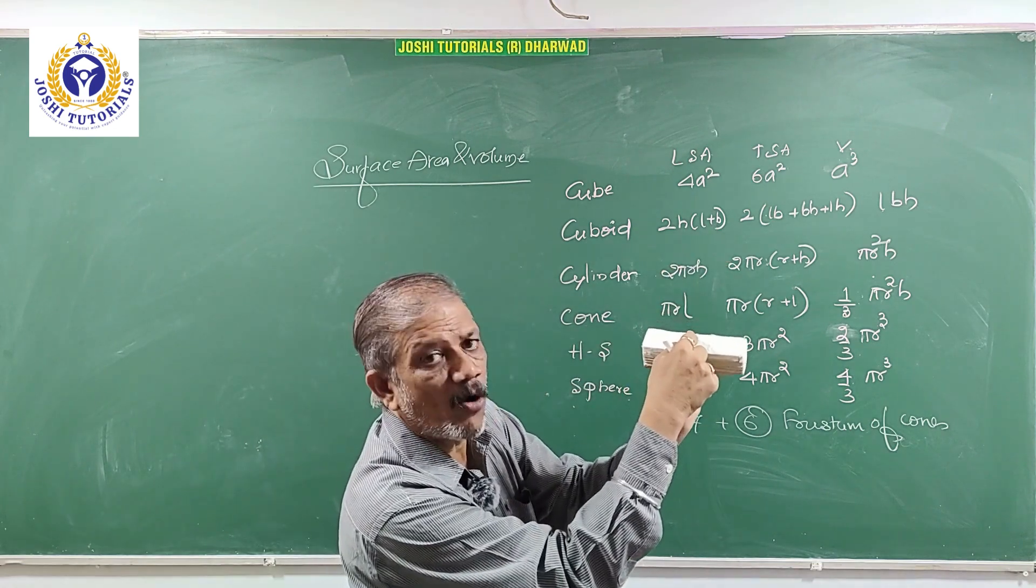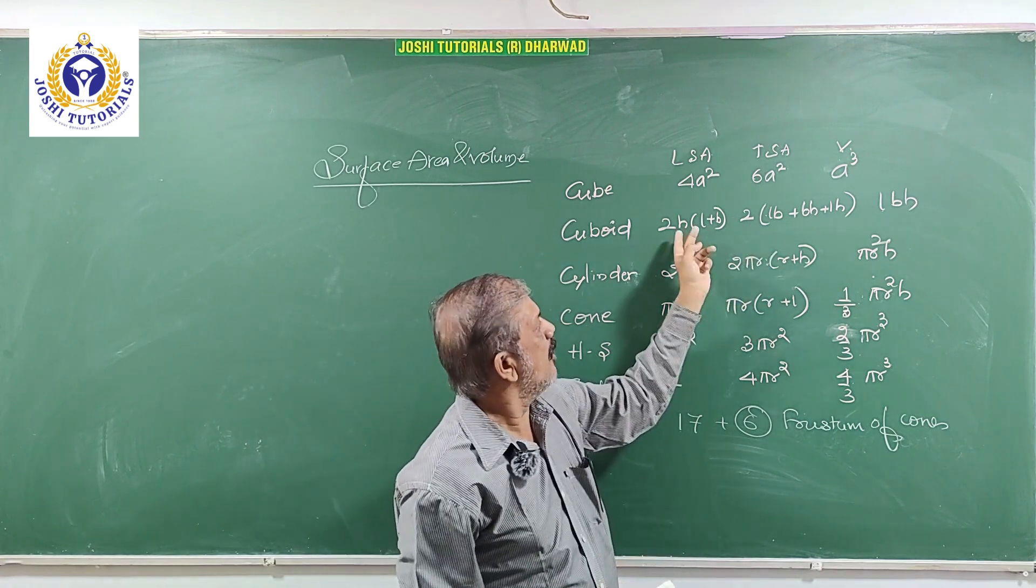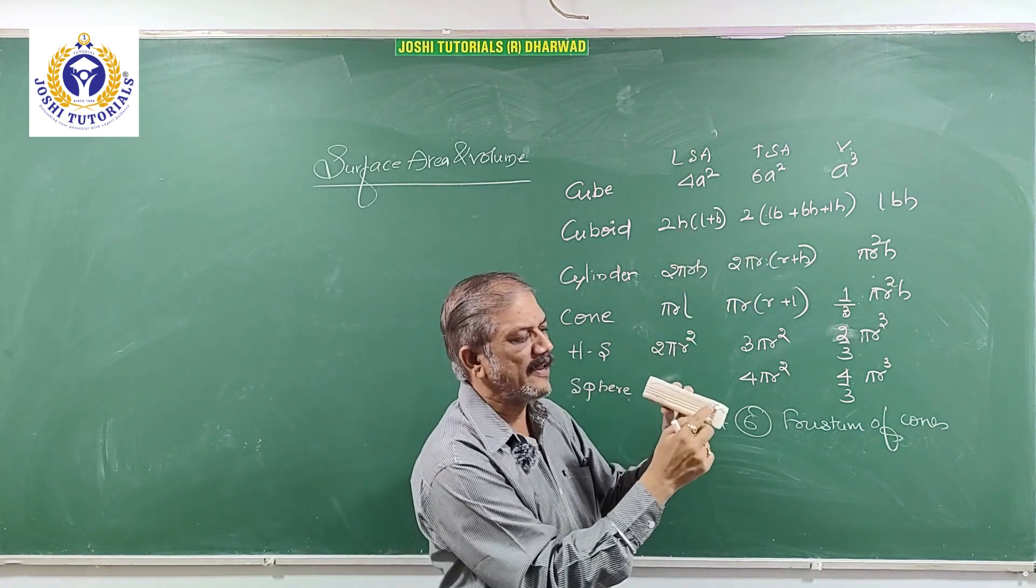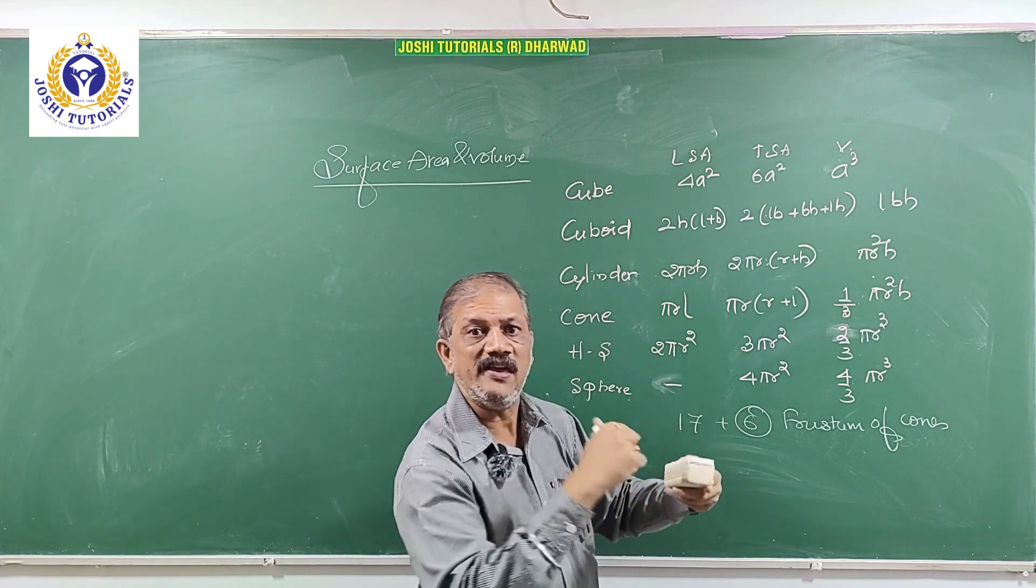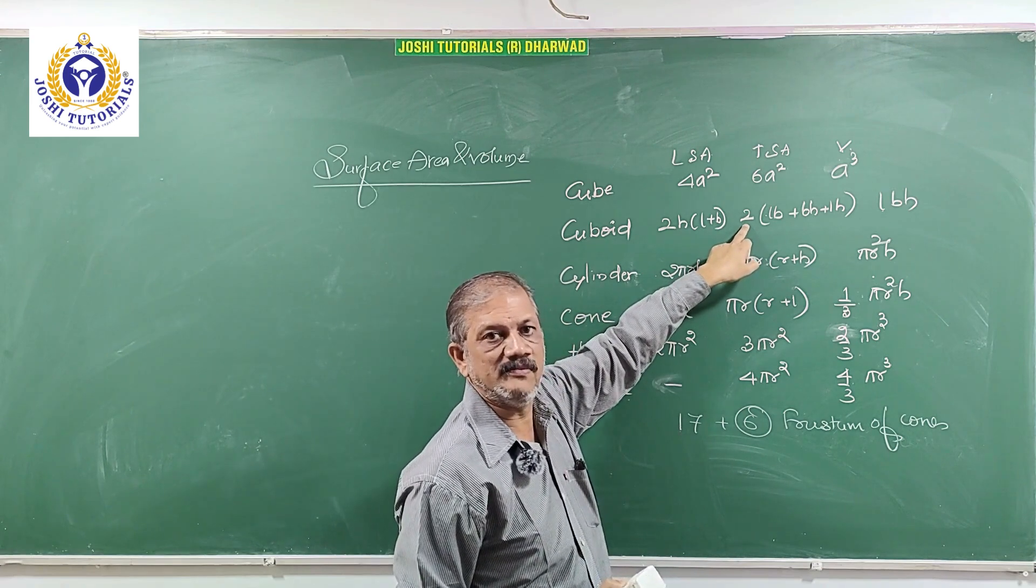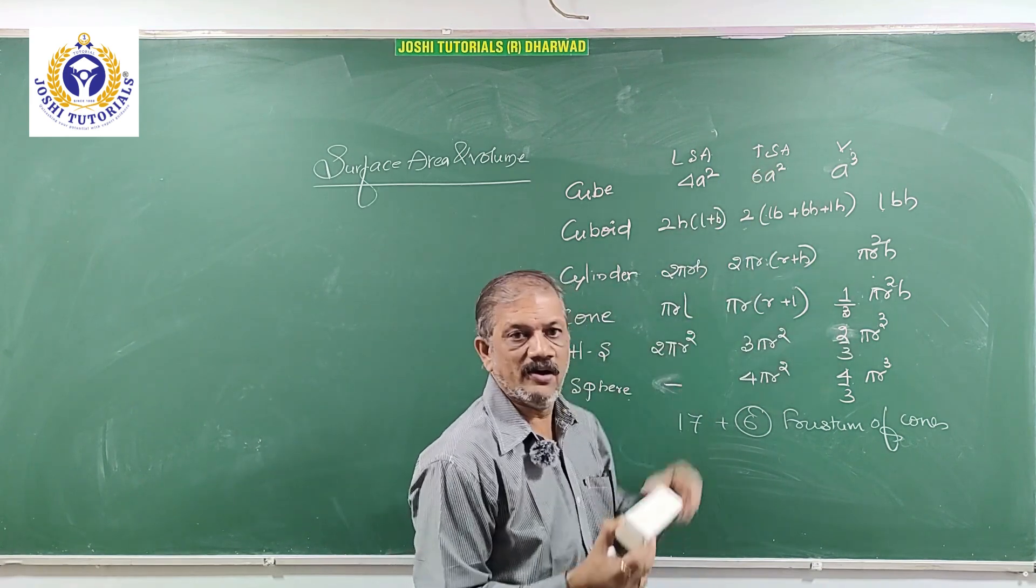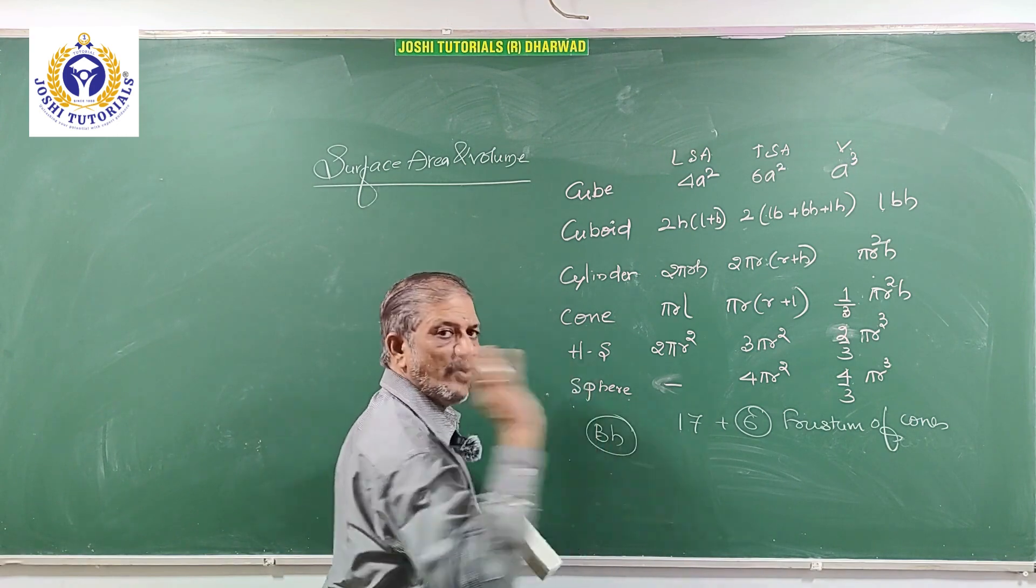That is 2H common L plus B. For TSA, you have to consider top and the bottom. Therefore all will be repeated: LH, BH, LH, BH, LB, LB. That is why 2 is taken common. And for volume, remember the basic information: base area into height.